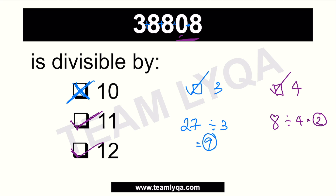As for where you'll use this — there are many applications. You can use divisibility rules when finding square roots, when factoring, and when multiplying or dividing fractions to know what you can cancel. There are many uses, and I hope this helps you work faster in math.